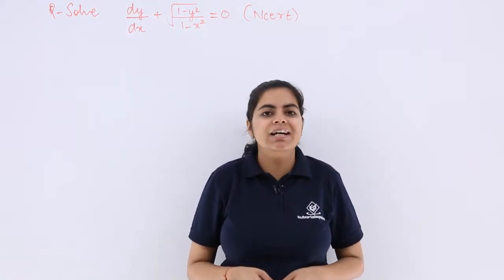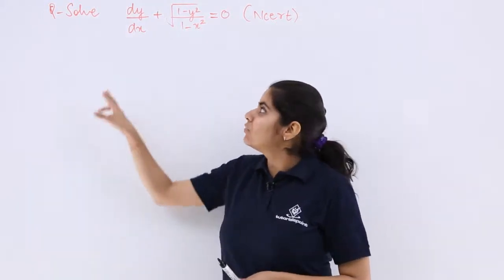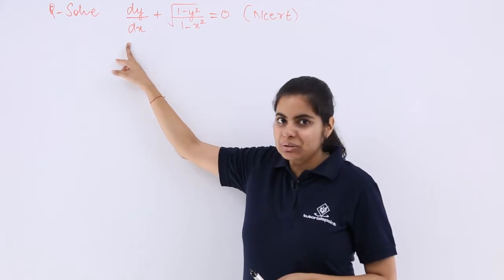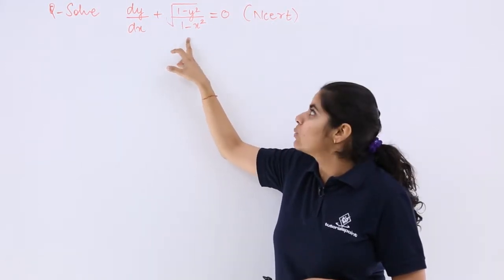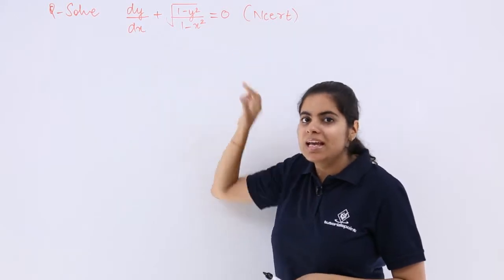So this question is your NCERT book question. It is again a first order, first degree differential equation question. It says solve dy by dx plus under root 1 minus y square upon under root 1 minus x square is equal to 0.